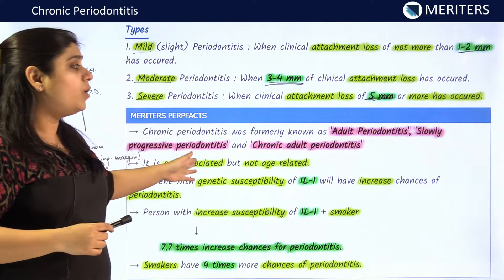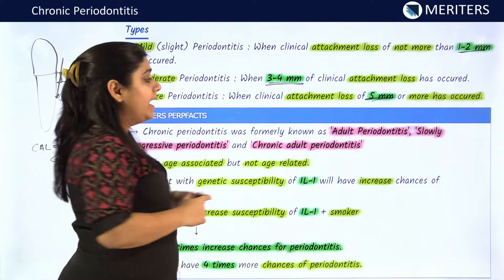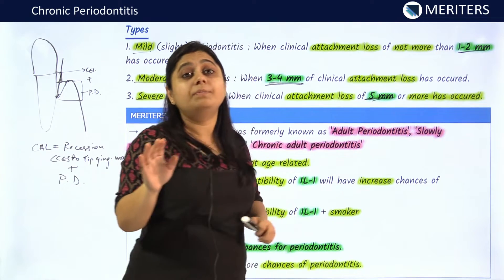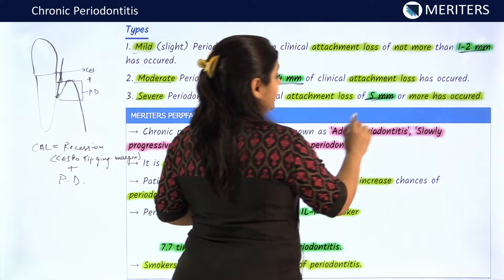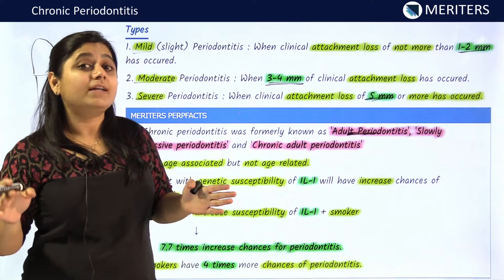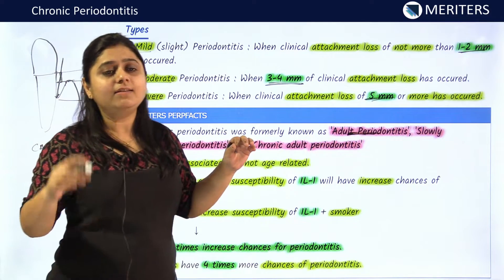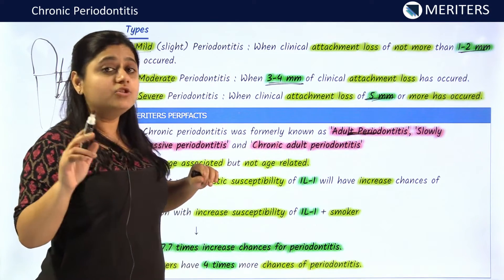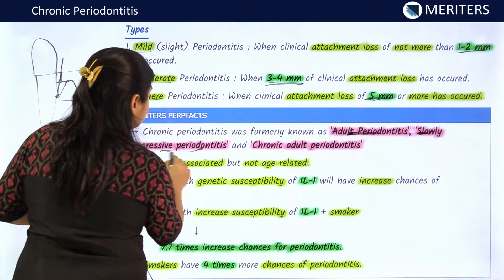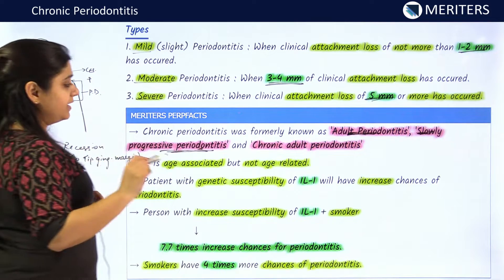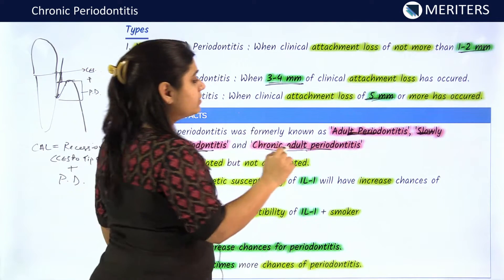Let us discuss some important points for MCQs. Chronic periodontitis was formerly known as adult periodontitis because it was believed to occur in patients over 30 years of age. But now it has been seen that it is not an age-related disease; however, it is most commonly seen with increasing age and can also be seen in children. It was known as slowly progressing periodontitis because of its slow rate of disease progression, as well as chronic adult periodontitis. It is also known as Riggs disease.